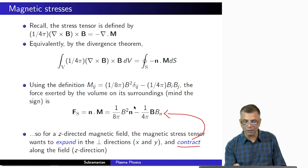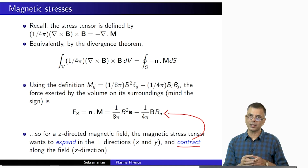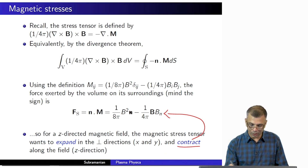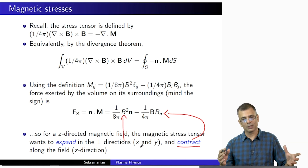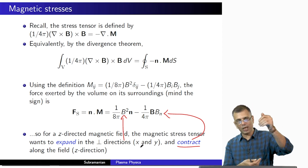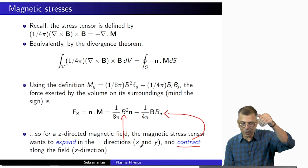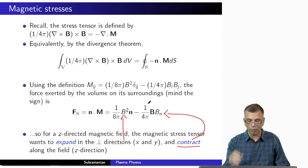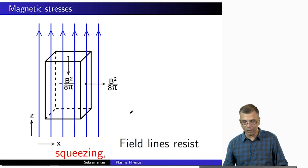On the other hand, the (1/8π)B² term has a positive sign, and for a Z-directed field, N is in the X and Y directions — perpendicular to Z. So the field wants to expand in the X and Y directions. It tends to contract along Z and expand perpendicularly — very much like a bunch of rubber bands.